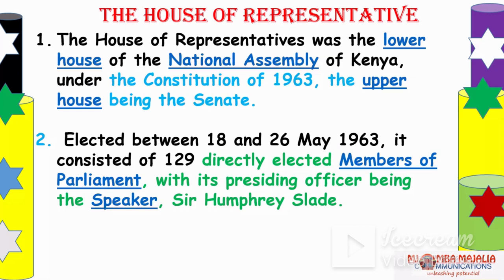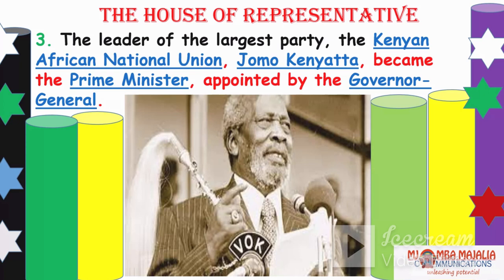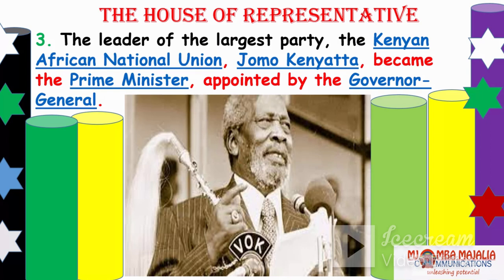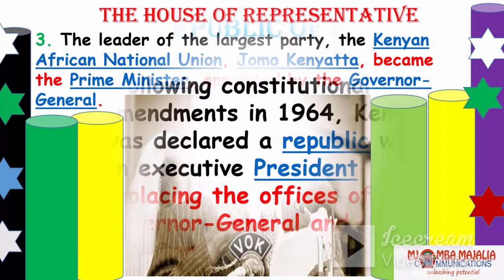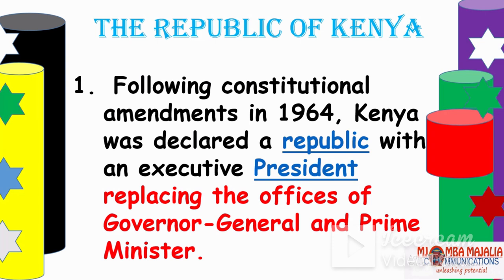The leader of the largest party — the Kenya African National Union — was Jomo Kenyatta, and he became Prime Minister, appointed by the Governor General. Following constitutional amendments in 1964, Kenya was declared a republic with an executive president replacing the offices of both Governor General and Prime Minister.